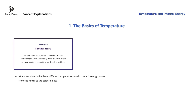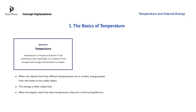When two objects that have different temperatures are in contact, energy passes from the hotter to the colder object. This energy is often called heat. An important note here is that temperature is not a type of energy — if it were, its unit would be the Joule. As a result of energy transfer between the objects, they can reach the same temperature, and when this happens, we say that the objects are in thermal equilibrium.